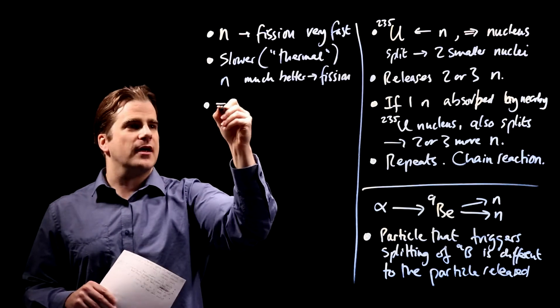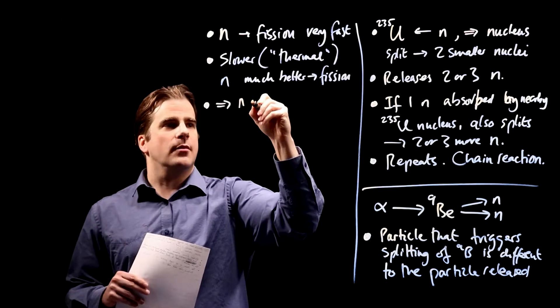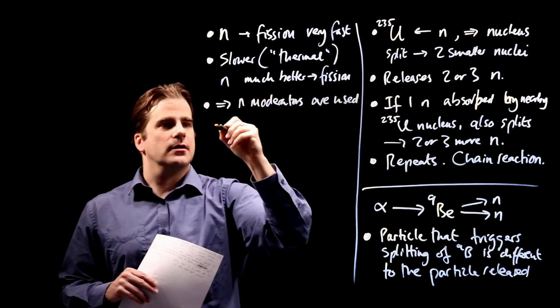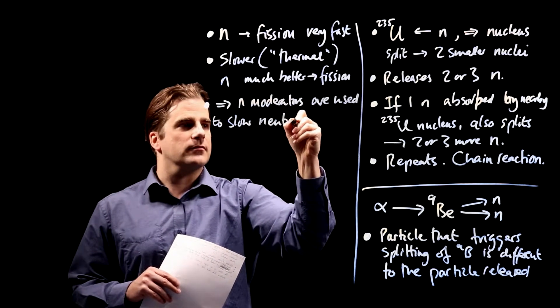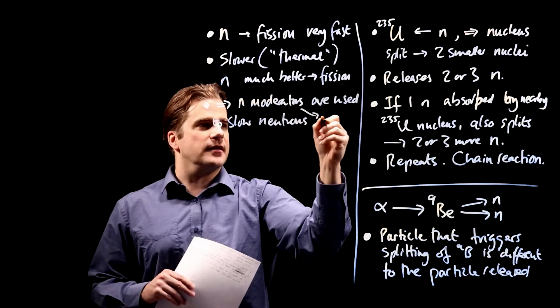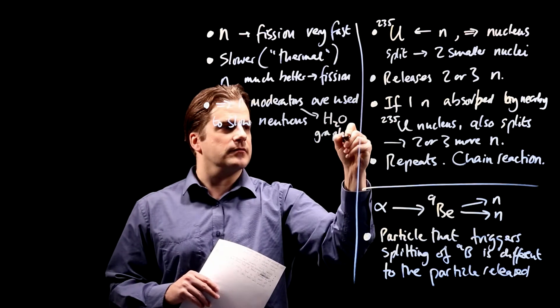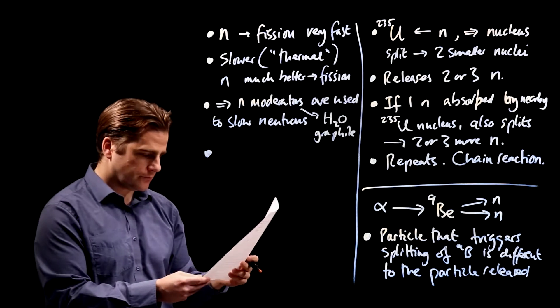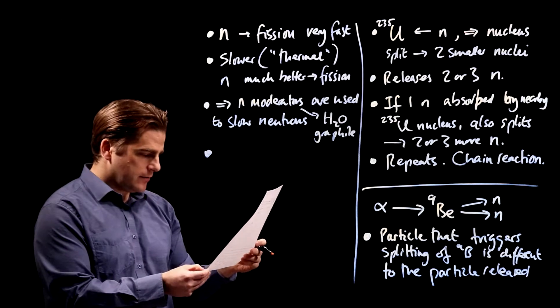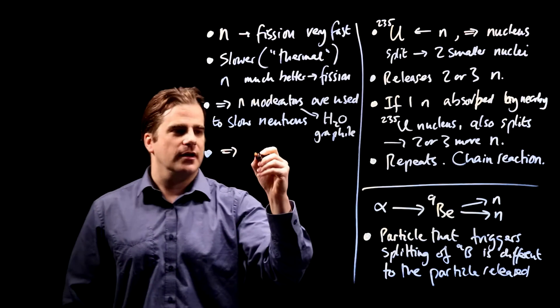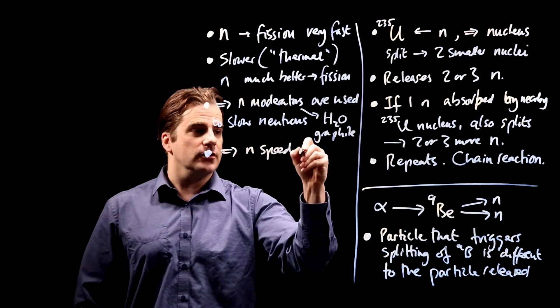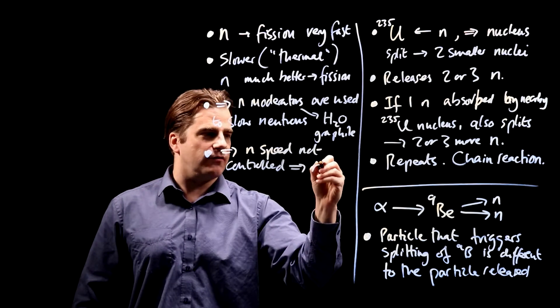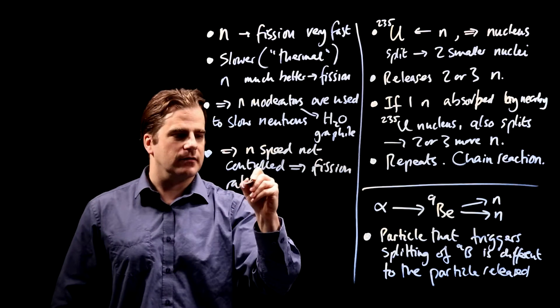Then say slower or so-called thermal neutrons are much better at causing fission. Then we'll mention the moderator. So therefore, neutron moderators are used to slow the neutrons. Neutron moderators are usually just water or graphite. So we're well on our way to three marks, if not got all three already. So therefore, if neutron speeds not controlled, then the reaction or the fission rates decrease.